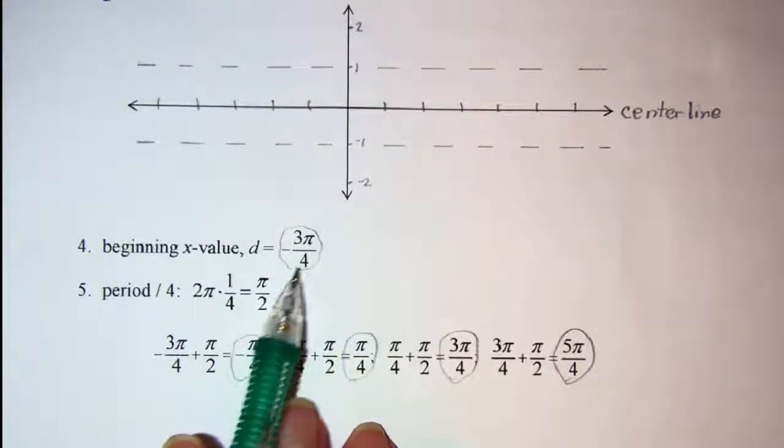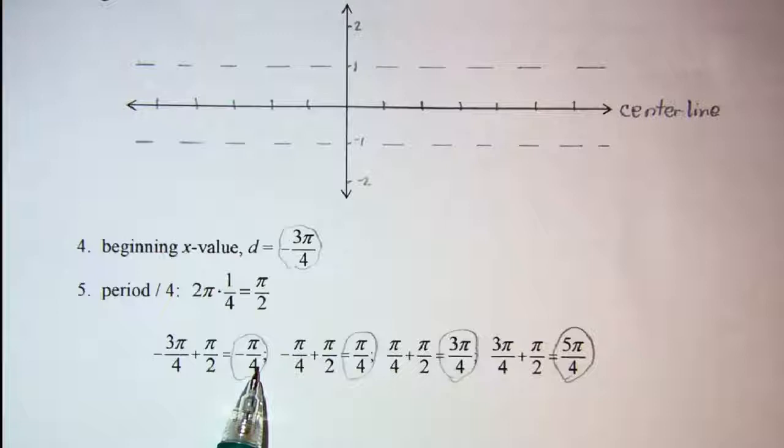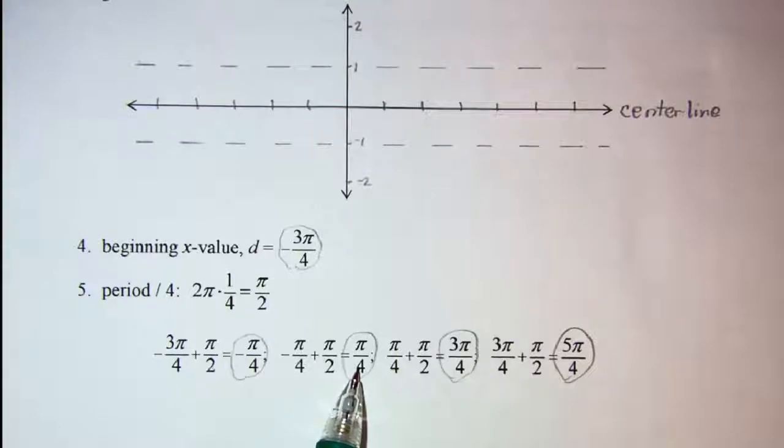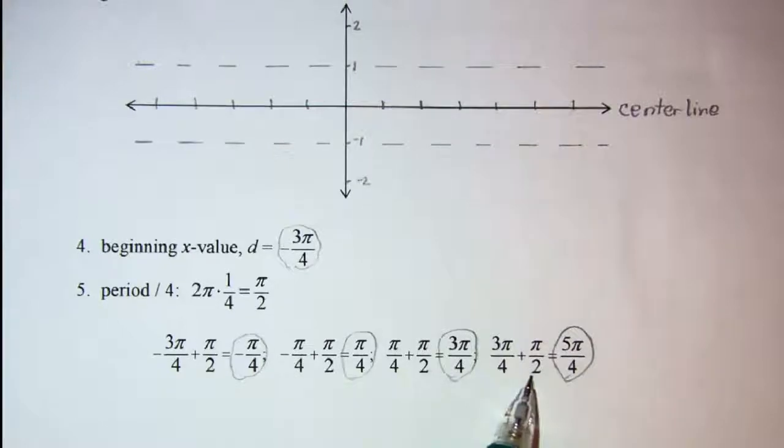So we start with negative 3 pi over 4 and add pi over 2 and we get negative pi over 4. Then we take that value and add pi over 2 and get pi over 4. Then we take pi over 4, add another pi over 2, and we get 3 pi over 4. Then take 3 pi over 4, add another pi over 2, and we get 5 pi over 4.